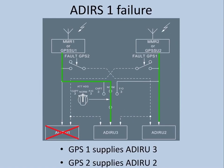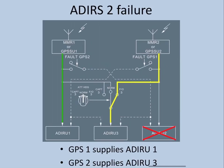In case ADIRU 1 fails, the aircraft maintains normal flow: GPS 1 supplies to ADIRU 3 and GPS 2 supplies to ADIRU 2. GPS 1 will continue to supply to ADIRU 1 — that's not a problem — but GPS 2 would not otherwise be used, so a forced switch is made ensuring GPS 2 supplies to ADIRU 3. This ensures both GPSs are used and integrity is maintained.